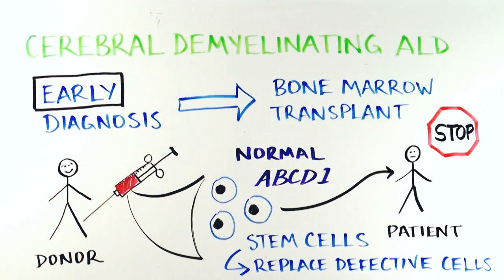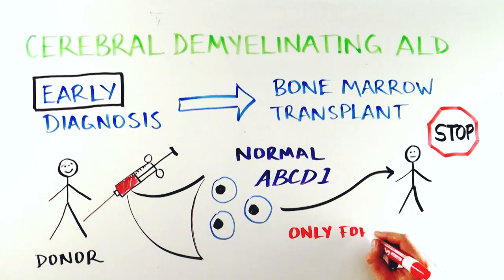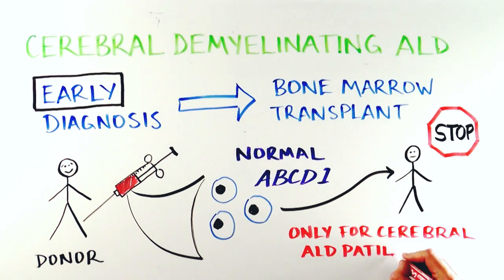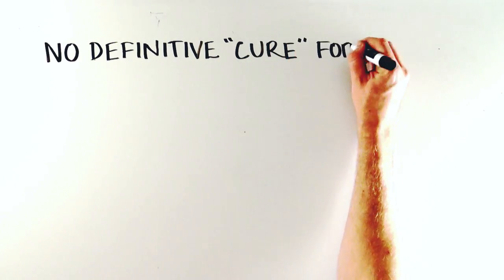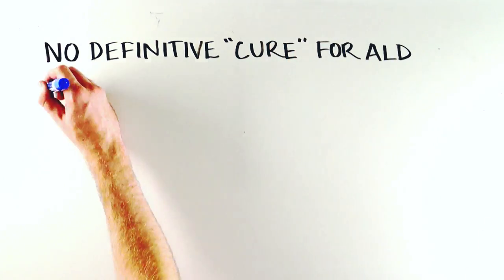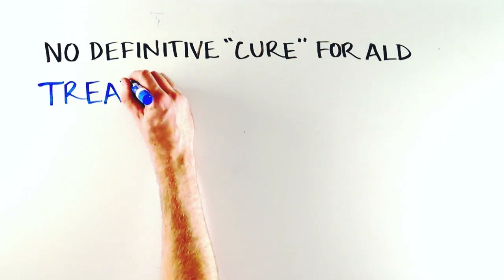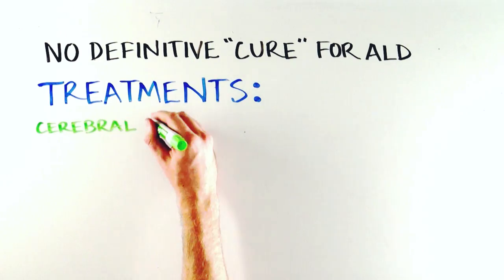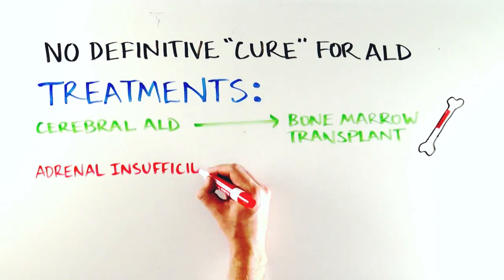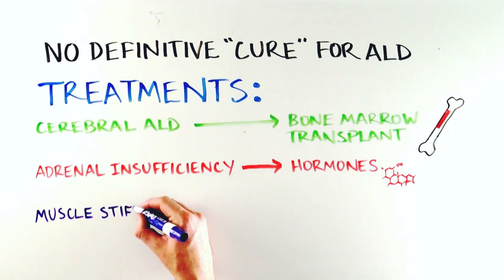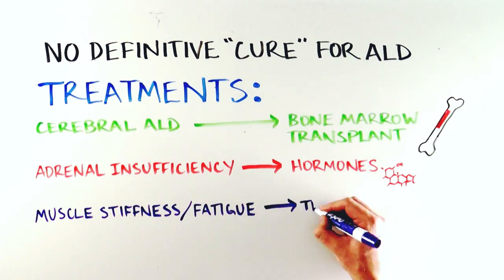This procedure only stops the progression of cerebral ALD if it is started very early in the course of disease, within a few months. This is why monitoring for cerebral ALD in boys and men is very important. Because bone marrow transplant carries the potential for serious side effects, it should only be used in patients with cerebral ALD. Unfortunately, there is no definitive cure for ALD, although some effective treatments do exist — bone marrow transplant for cerebral ALD, and hormone supplements for adrenal insufficiency. We can also treat individual symptoms like muscle stiffness and fatigue depending on the patient's condition.